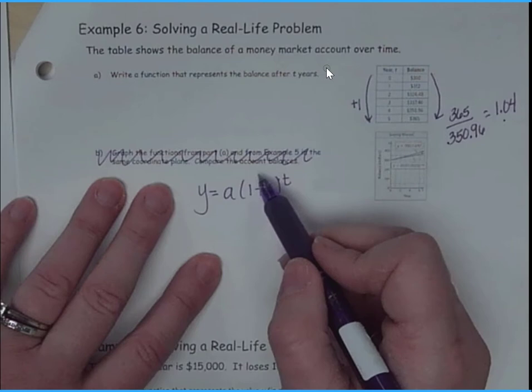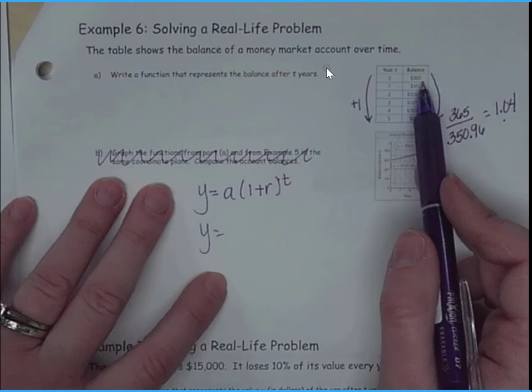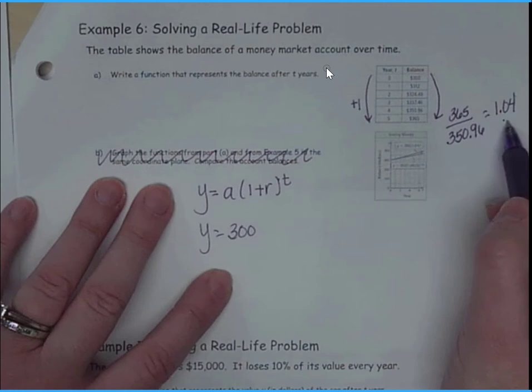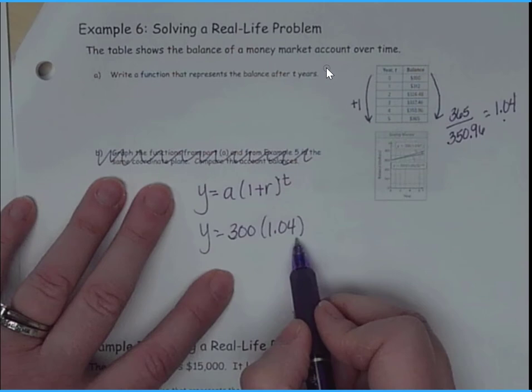So what's my initial amount? Well, I'm starting with 300. Now, I've already done the math here. So I end up with 1.04 to the t. So I've got my exponential decay, or I'm sorry, so I have my exponential growth.